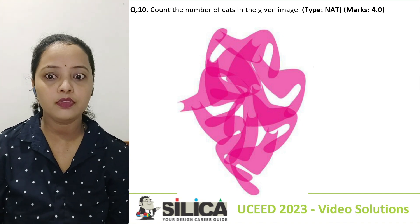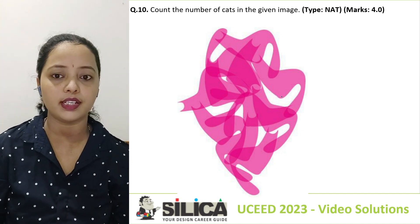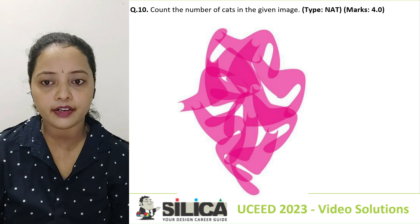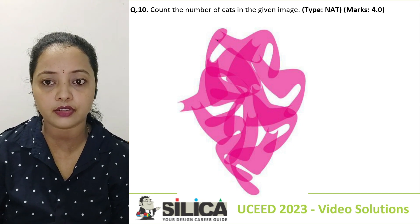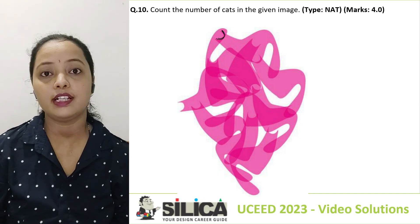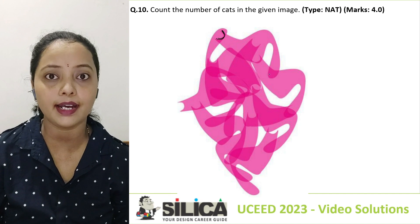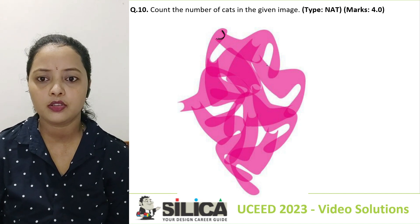Now the figure seems to be a little weird. What you can do is take reference of these ear-like structures that you see in the image. That's the head of the cat — let's count them one by one.